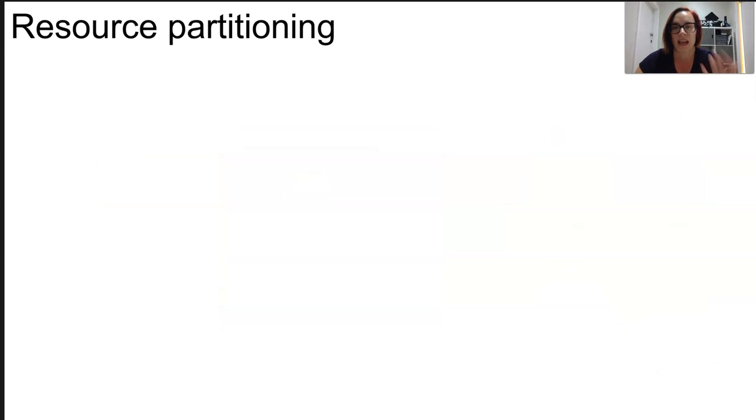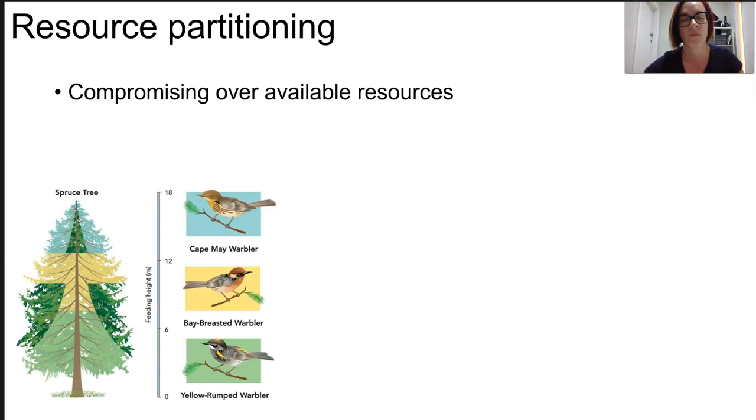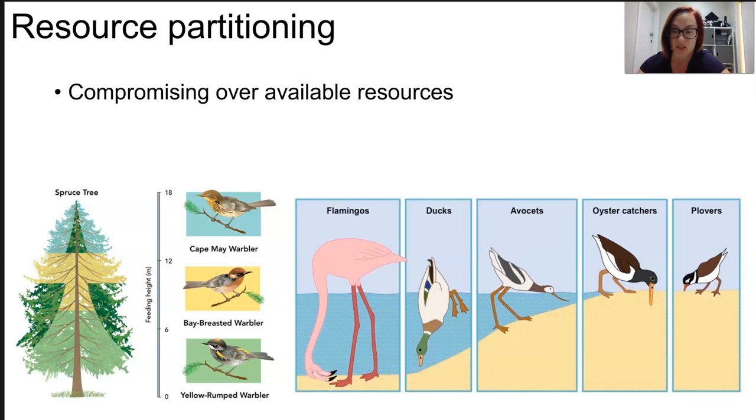Now resource partitioning has to happen when we're making compromises over available resources. So it might be that we need to feed at a different time of day, it might be that we need to feed at a different space within the micro habitat. Birds do this quite easily along the shoreline. They feed at different depths based on their bills and their legs and all those kinds of things.